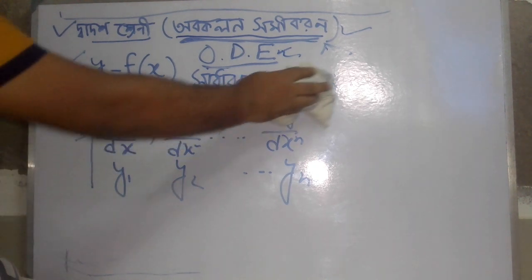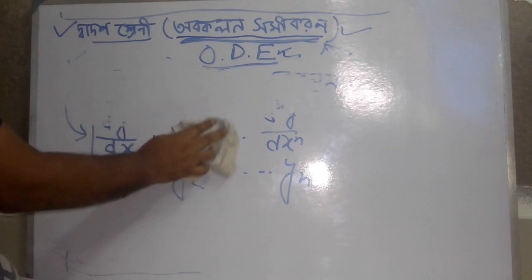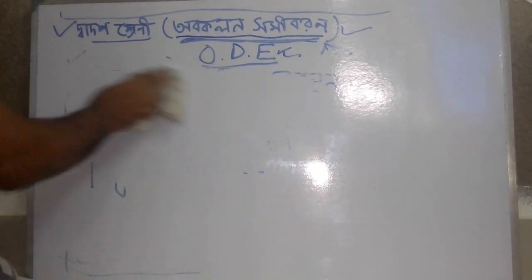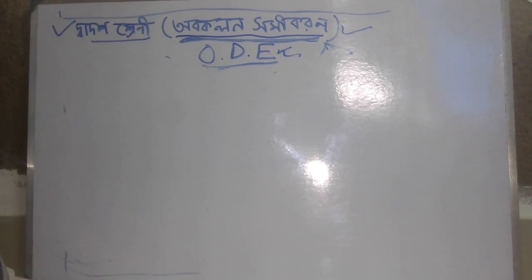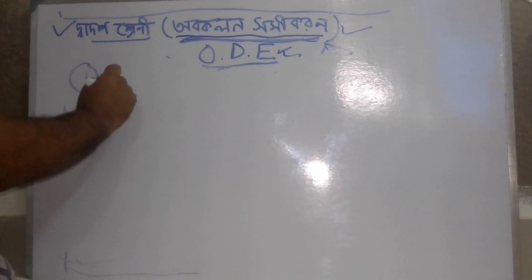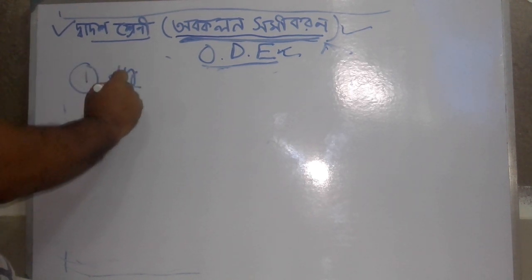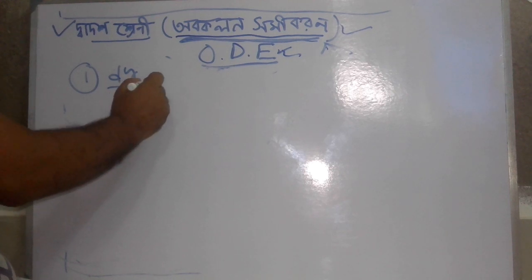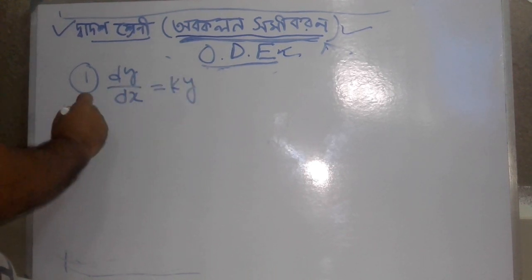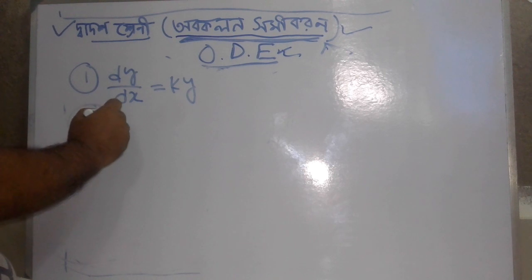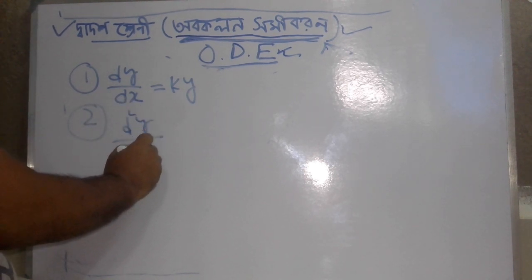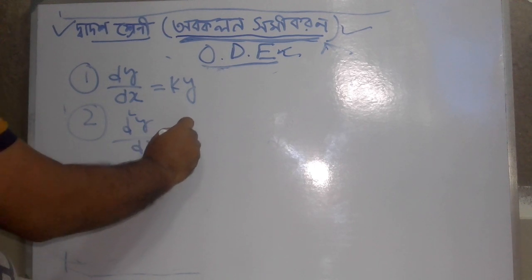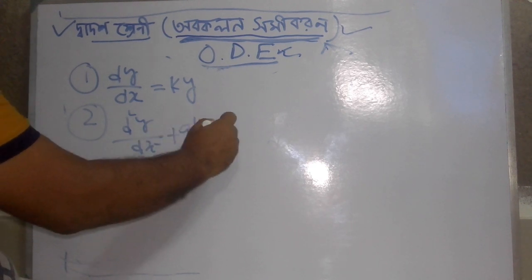I will see the correct answer and write it. The function equals — I will write the correct answer — equals d²y/dx², equals ay equals 0.